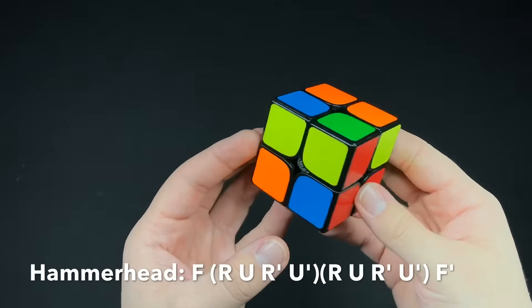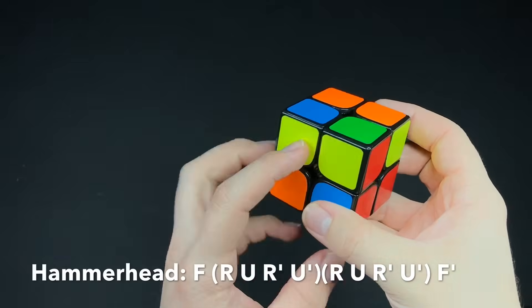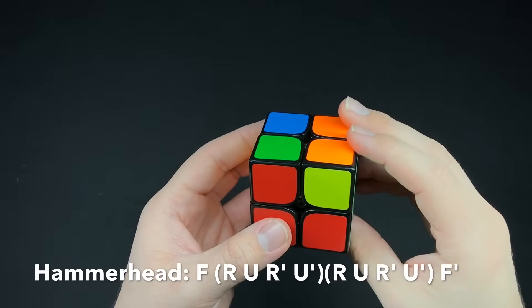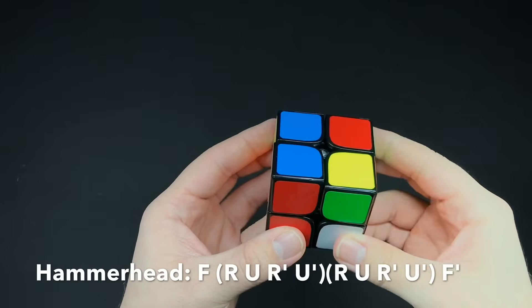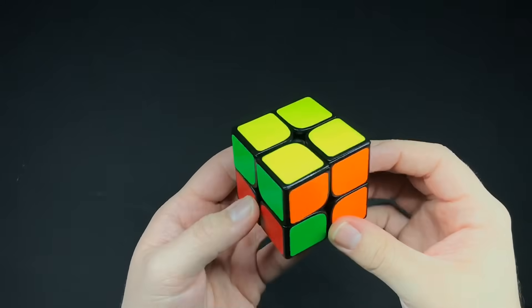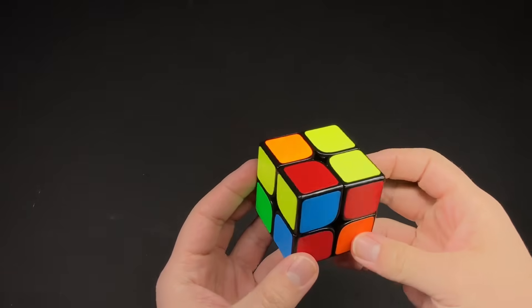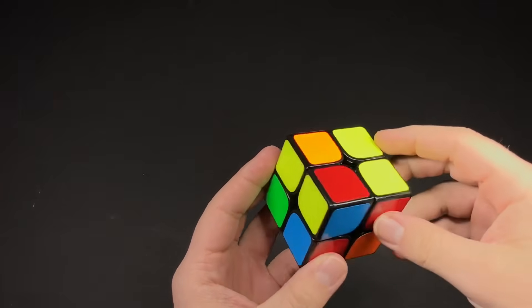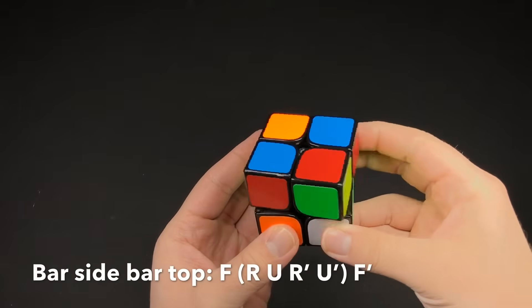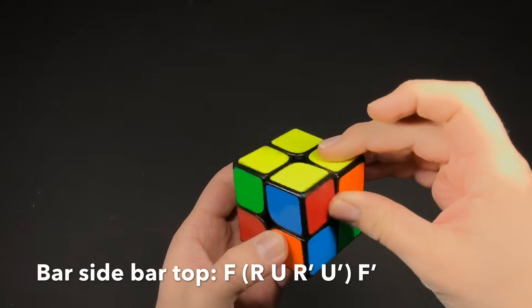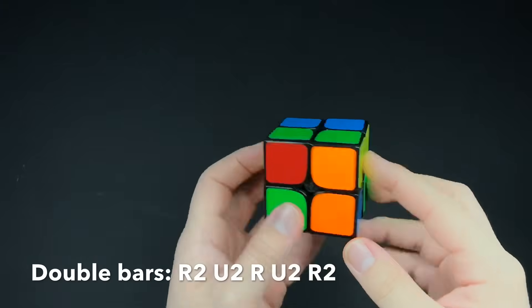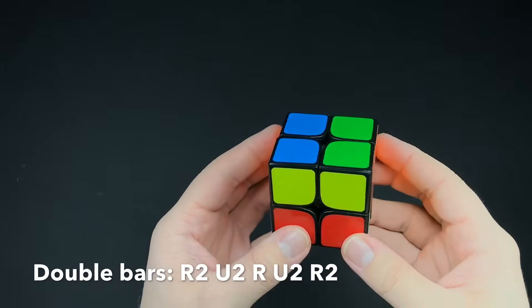In this case, you have none on top and you have a bar right here, and then these two are on opposite sides. You hold it with the bar on the left and do this algorithm. And this one, you have the bar on the top and then the bar on the side. And then the last case is when you have none on top and you have two bars on opposite sides. And it goes like this.